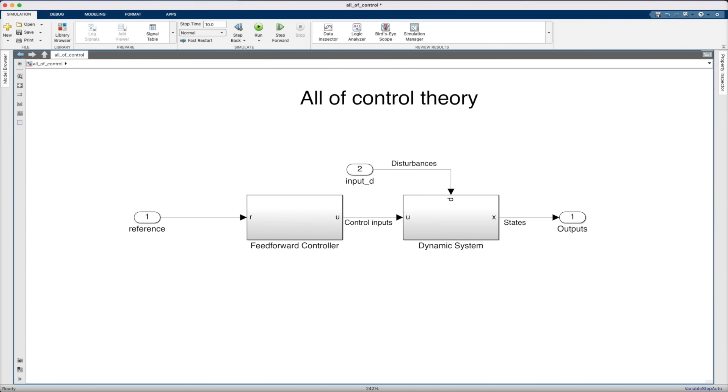In feedback control, the controller uses both the reference and the current state of the system to determine the appropriate control inputs. That is, the output is fed back, making a closed loop, hence the name.